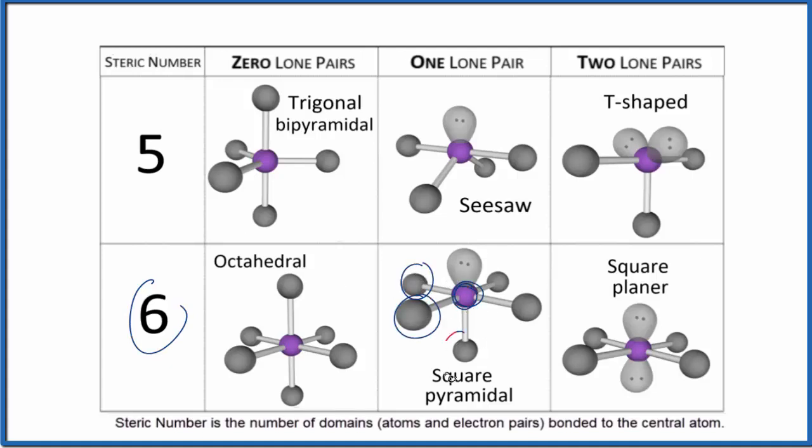We have one, two, three, four, five atoms, and then we have the one lone pair. So six total things, and one of them is a lone pair. That gives us a square pyramidal molecular geometry.